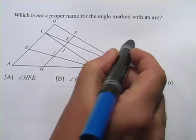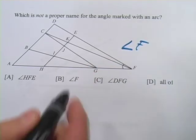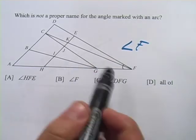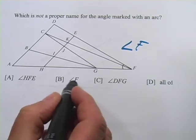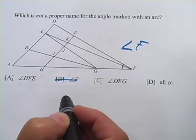So, we could call it angle F. That's okay. And remember, we're looking for the name that's not right. And look, we have angle F down here, so that's right. That's a correct angle, so it's not what we're looking for.